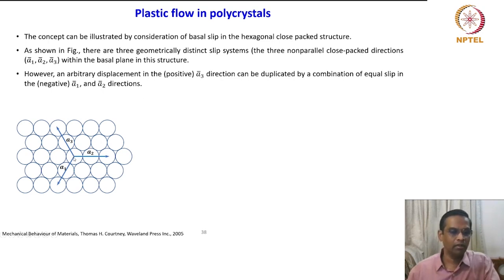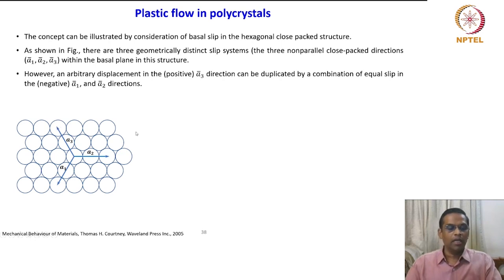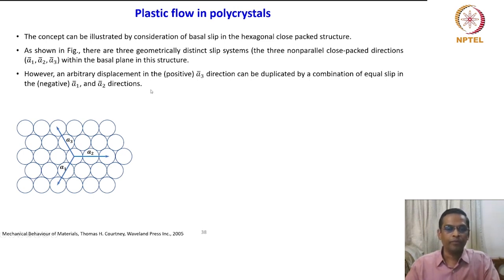Suppose if I travel from the center along the a3 vector by two units, I reach an endpoint. I can also arrive at that same point by traveling in the negative directions of a2 and a1. So if I choose to travel in the negative a1 direction — 1, 2 — I reach there; and using a2 in the negative direction — 1, 2 — I also come to the same point. Thus a3 is duplicated by a combination of a1 and a2, and so it is not considered independent.